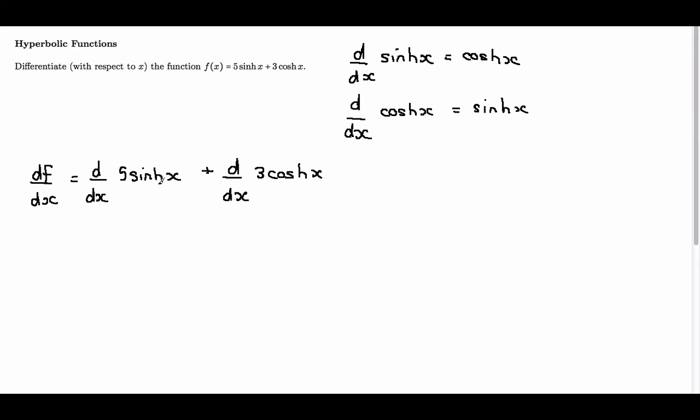The derivative of 5 sinh x is the same as 5 lots of the derivative of sinh x, plus 3 lots of the derivative of cosh x. We simply differentiate sinh x to give cosh x, and differentiate cosh x to give sinh x.